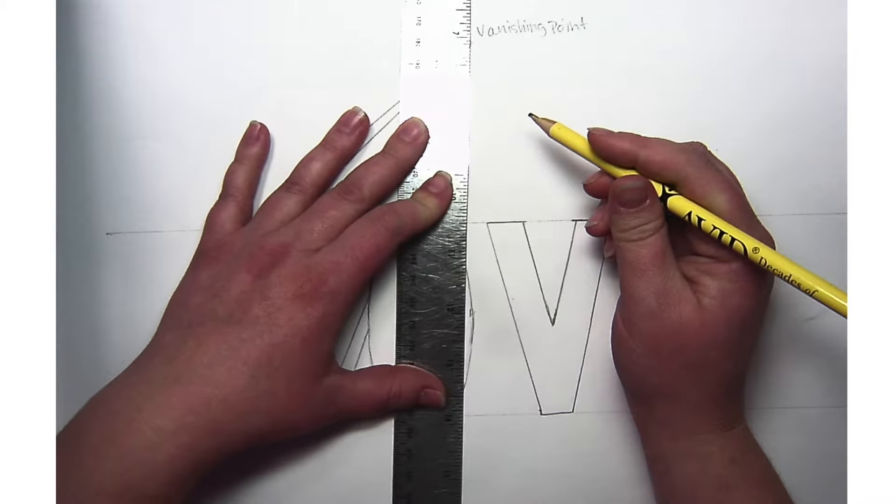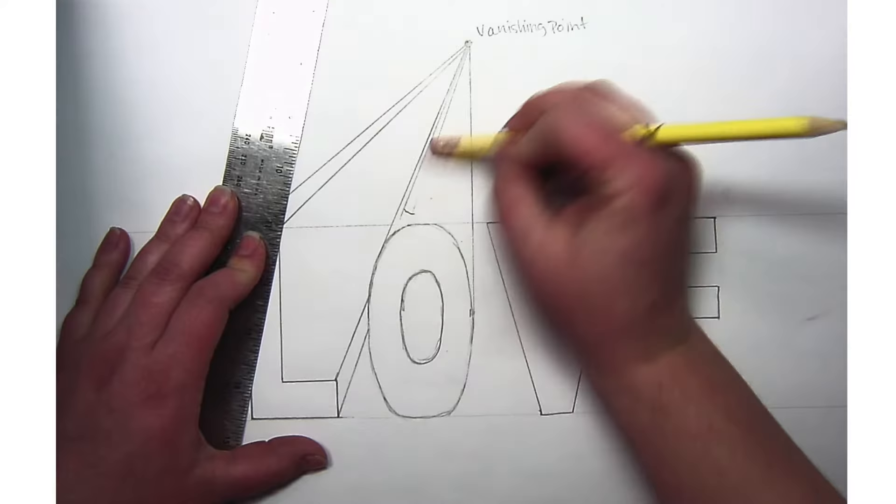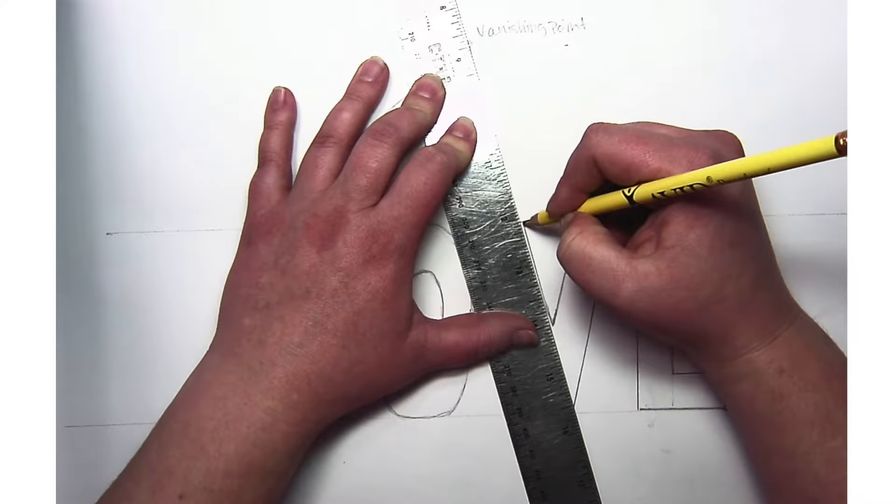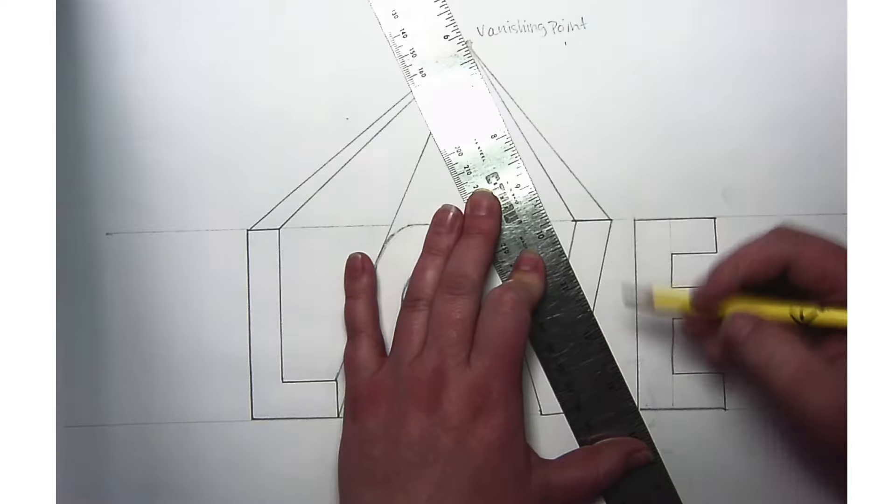I'm going to erase those other lines where the O blocks. Now find each of my corners from the V and connect them to that same vanishing point. I just rotate my ruler and always make sure the lines connect to the vanishing point.